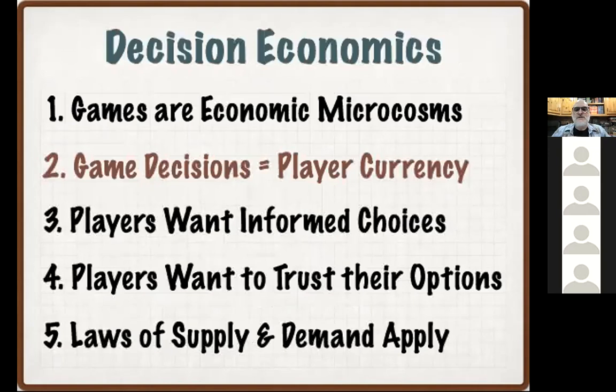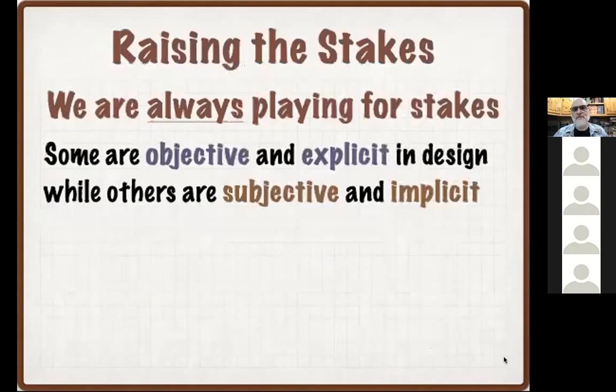If we've got all of these decisions at our fingertips — and hopefully they're meaningful and interesting decisions — then each individual decision is a unit of currency. At the beginning of the game we may or may not know how much is in our billfold. Some games last a very specific number of rounds and each round has a specific number of actions. If our game lasts 25 rounds and every round you get two actions, we've got $50 in our wallet to make our game decisions.